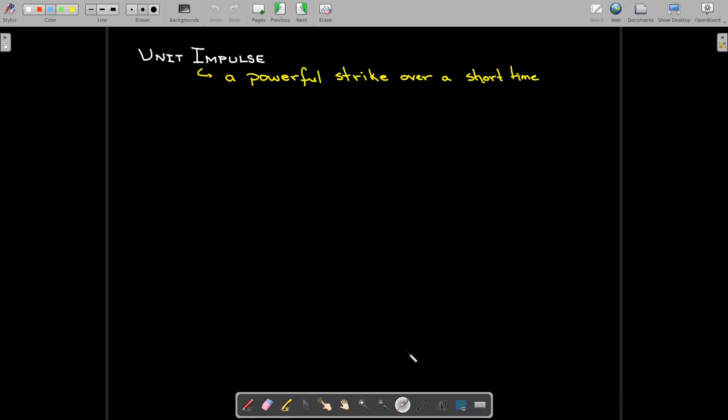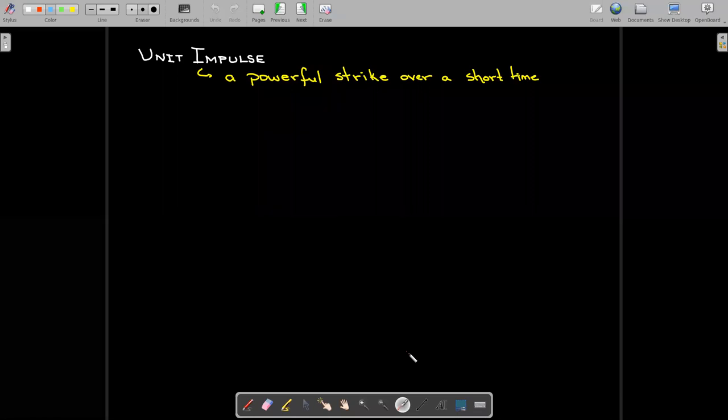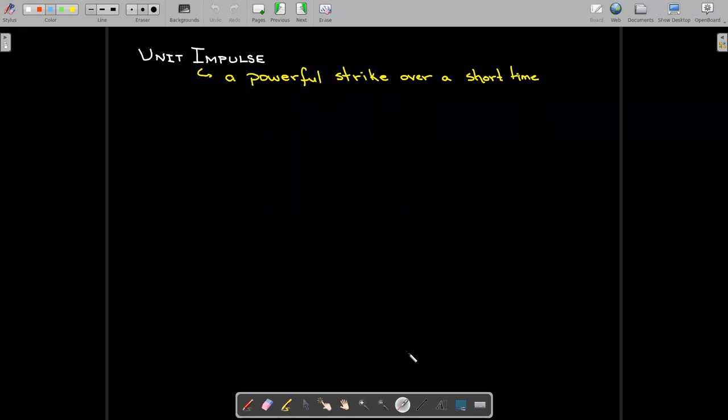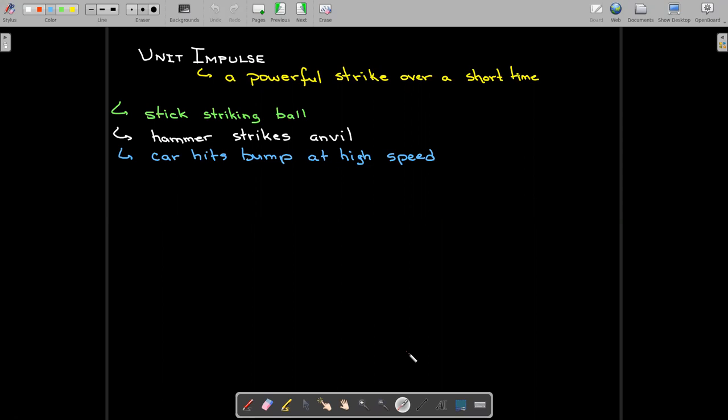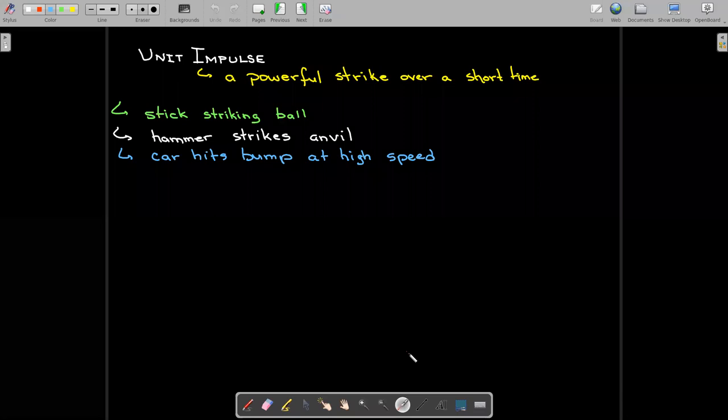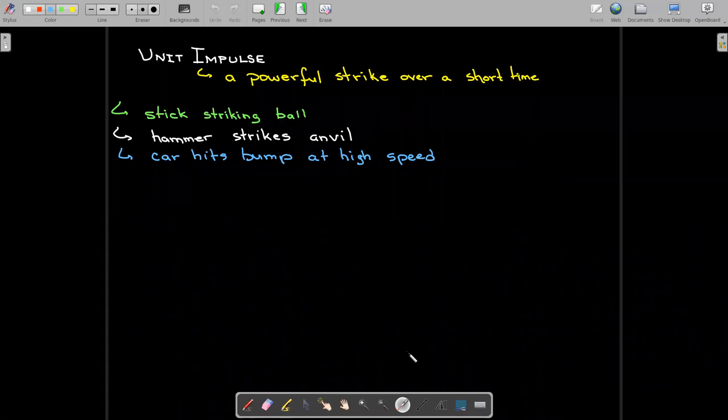So obviously we know this is going to be some kind of unusual object, this generalized function, and it's related to this idea of a unit impulse, which we're going to describe as a powerful strike, a powerful force applied over a short period of time. This could be helpful in modeling when you have a stick striking a ball, a golf club or baseball bat hitting a ball, a hammer striking an anvil, or a car that hits a bump at high speed.